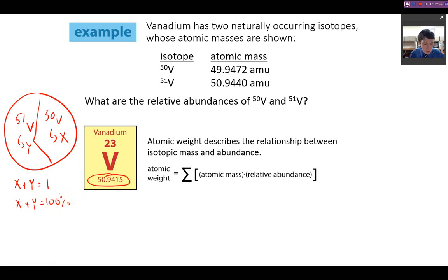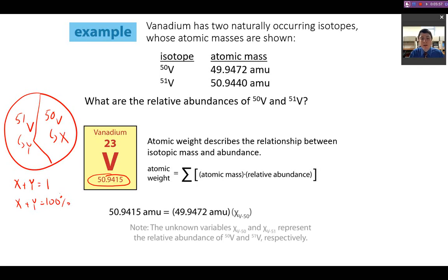Now that we know that, we can find the actual abundances, because we can combine that with the atomic weight relationship, where the average atomic weight is the isotope mass times its fractional abundance, plus the isotopic mass of vanadium-51 times its abundance. So by combining these two relationships, we can solve.